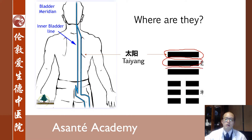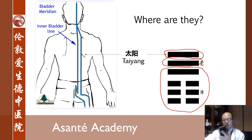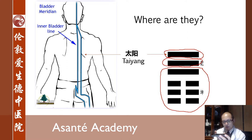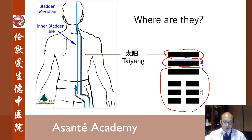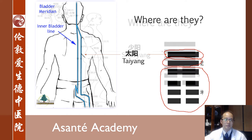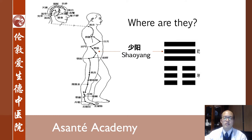All other meridians are yin meridians. Let me explain using my phone as an example. This is the back of the phone, this is the side of the phone, and this is the front of the phone. Taiyang is on the back — this is the Taiyang. Shaoyang is on the side — this is the Shaoyang. All other yin meridians are at the front. Back to the chart: Taiyang is on the back of the human body, and Shaoyang is on the side of the body, just like the side of your mobile phone.